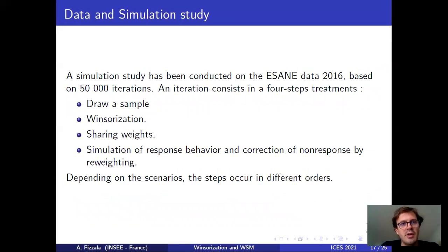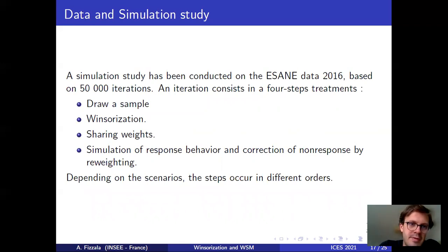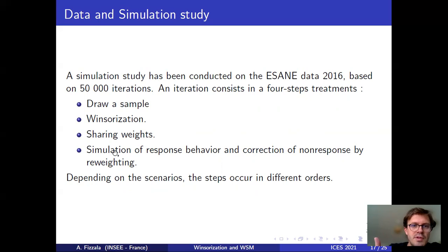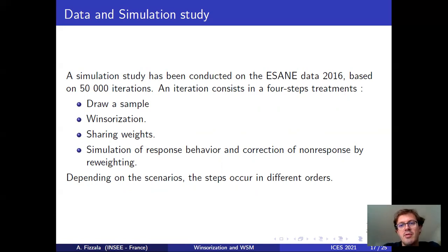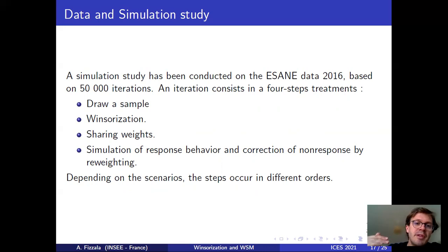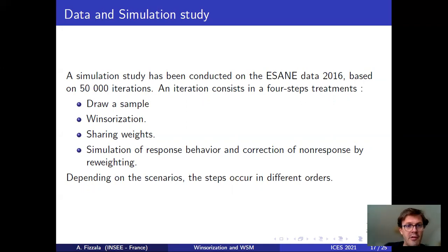To evaluate these four scenarios, a simulation study was conducted on HESAN data 2016, based on 57 iterations. Each iteration consists of a four-step treatment: draw a sample, Winsorize the sample, apply weight sharing, and simulate response behavior with correction for non-response by re-weighting. Depending on the scenario, the steps occur in different orders, but they all lead to a final estimation.